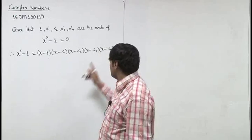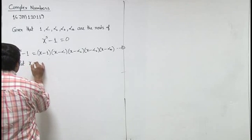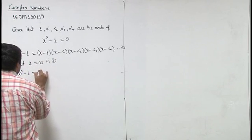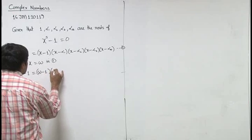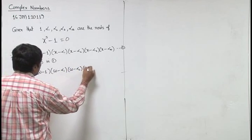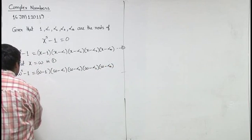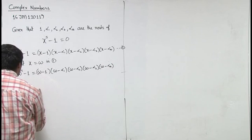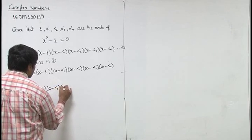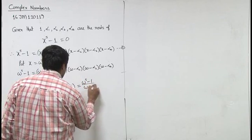To evaluate this expression, we first put x equal to omega. So we have omega raised to power 5 minus 1 equal to (omega minus 1)(omega minus alpha 1)(omega minus alpha 2)(omega minus alpha 3)(omega minus alpha 4). From here, we can write (omega minus alpha 1)(omega minus alpha 2)(omega minus alpha 3)(omega minus alpha 4) equal to (omega raised to power 5 minus 1) upon (omega minus 1).